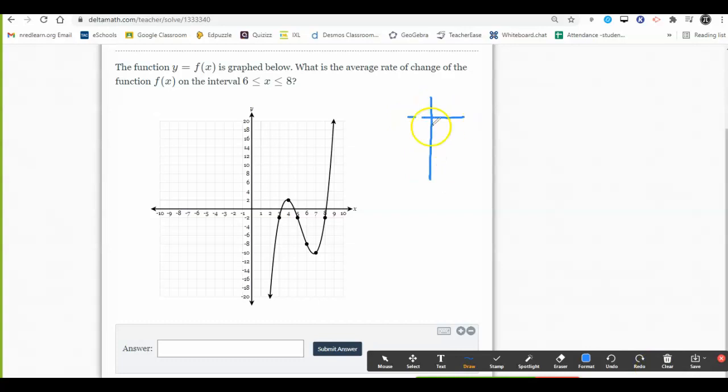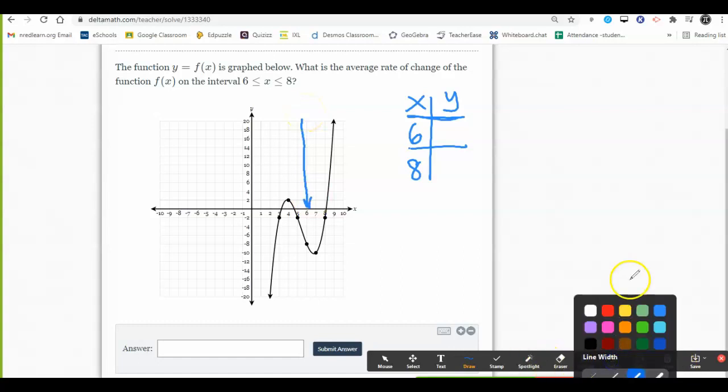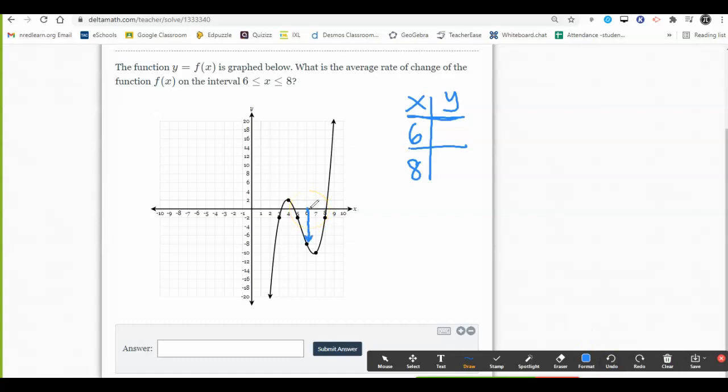If we were going to make a table, our table would have x values of 6 and 8, and we need to go get the y values. Since we don't have an equation, we have to use the graph. I go to my x-axis to the number 6, and from there I have to find out where the graph is. From 6, I have to go down to negative 8. So my point here would be negative 8.